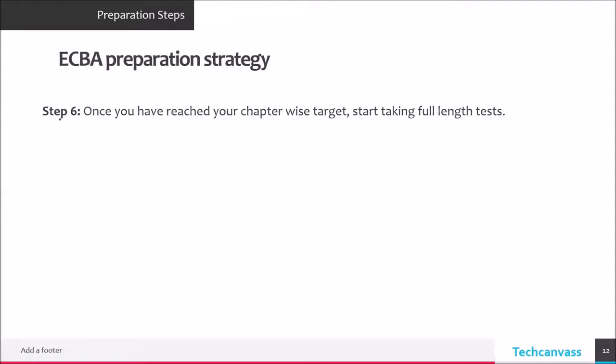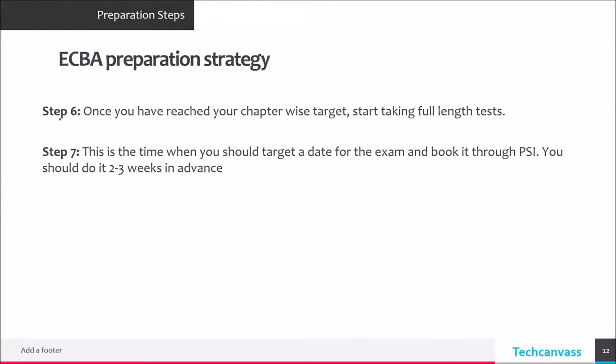After you finish the chapter-wise tests, you can start taking full-length tests. Full-length tests have 50 questions with a one-hour timeframe — that's the real simulated test. There are multiple tests available in your question bank. As you take one or two tests and start getting 70% or above, that's the time to book your exam date. Keep in mind that you typically cannot get an exam slot within a week — it takes a little more than a week. Two to three weeks advance booking is a very safe bet. Don't delay booking by more than three weeks.